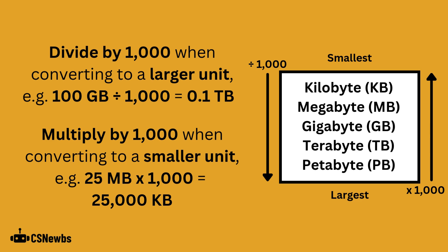You must multiply by 1000 when converting to a smaller data unit. For example, 25MB multiplied by 1000 would give you 25,000 kilobytes.